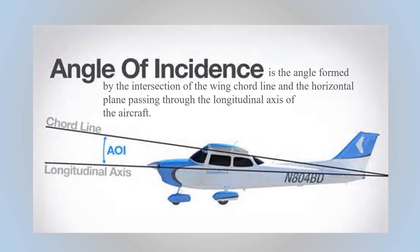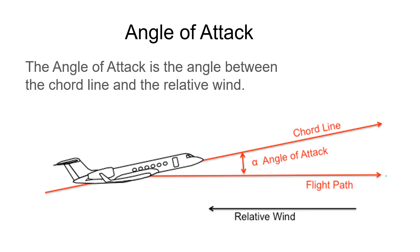The angle of incidence is the angle between the chord line of the wing and the longitudinal axis of the aircraft. The angle of incidence is constant and does not change for an aircraft. The angle of attack is the angle between the chord line of the wing and the relative wind. As the angle of attack increases, the lift generated by the wing increases up until the point where the airflow over the wing becomes disturbed and lift falls off.